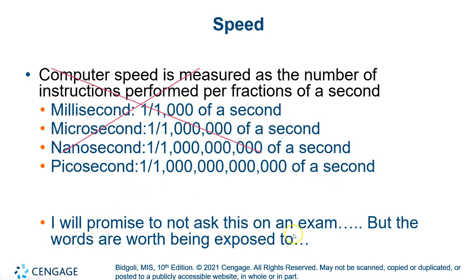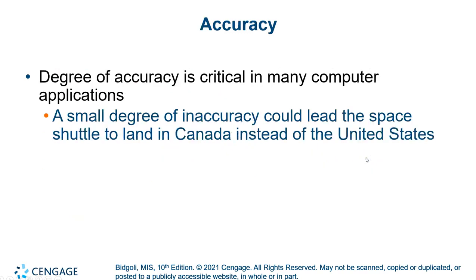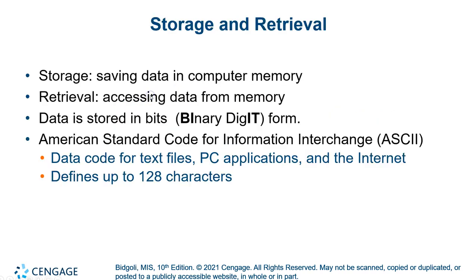In terms of speed, it is broken down into things like milli, micro, nano, and picoseconds. Just think — one of whatever that number is of a second. It's beyond comprehension, kind of like you just have to have faith. A small degree of inaccuracy could cause some big consequences, so accuracy is really critical.